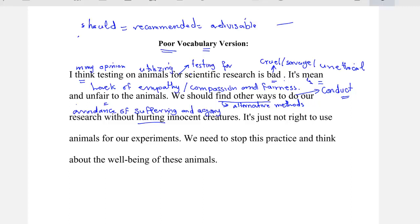'Innocent creatures' — 'innocent' here means the weak animals. So, we can use the word 'defenseless' or 'vulnerable.' Vulnerable animals or vulnerable creatures. 'It's just not right to use animals for our experiments' — we can say 'the experimentation is not right,' meaning it's not accepted.